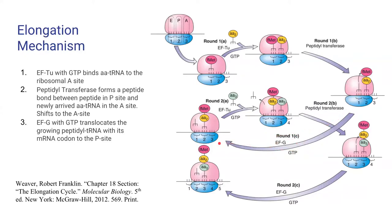EF-G, along with GTP, translocates the growing peptidyl-tRNA with its mRNA codon to the P site. The process repeats itself for however long the peptide extends.